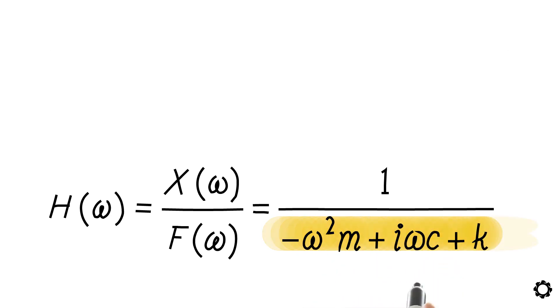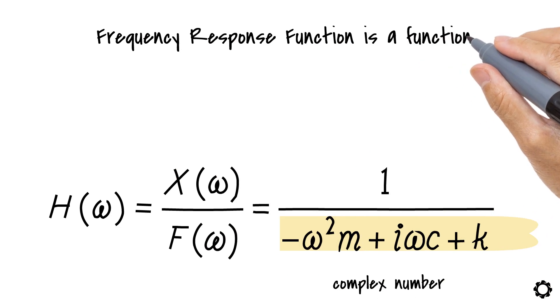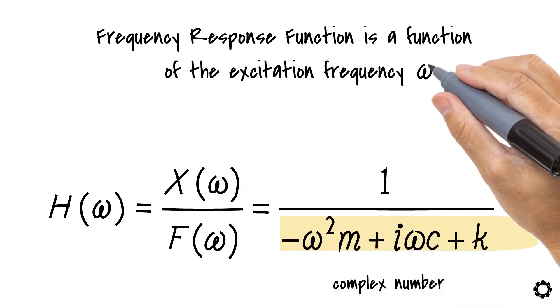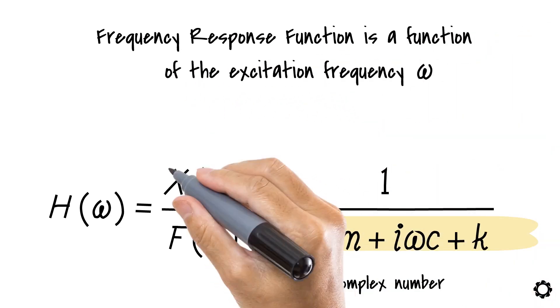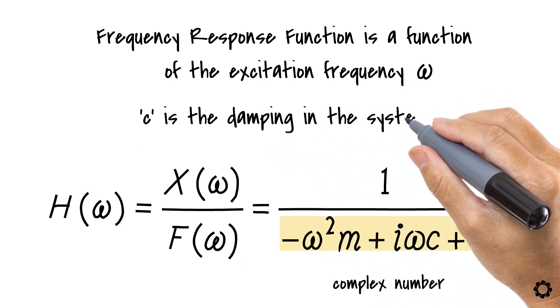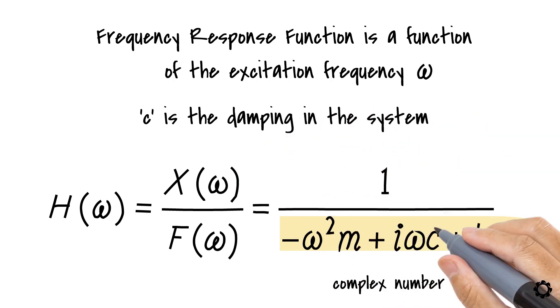Now focus on the denominator. What does it tell you? That the ratio will be a complex number having real and imaginary parts. Also as mentioned before the frequency response function is a function of the excitation frequency ω. Now remember the c is the damping in the system and that is what we are going to estimate from the experiment.